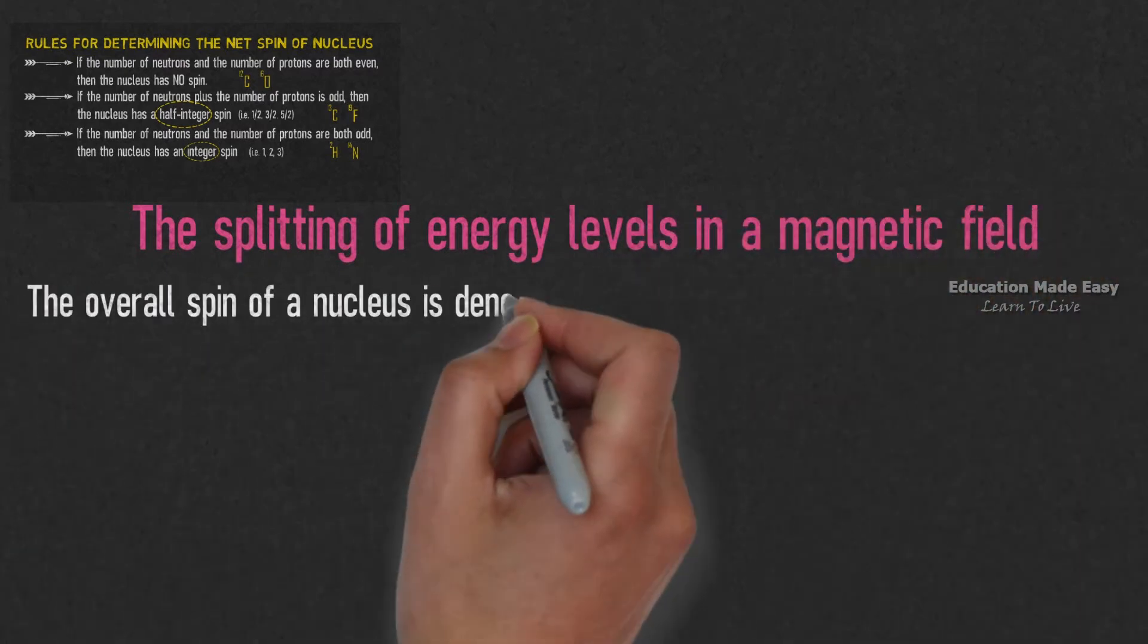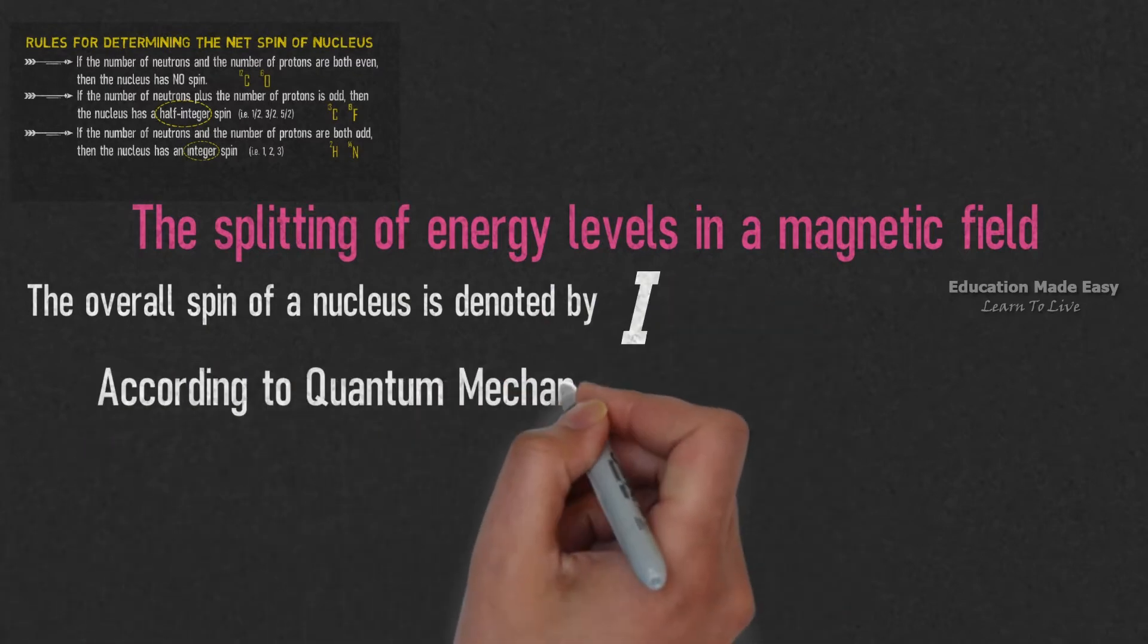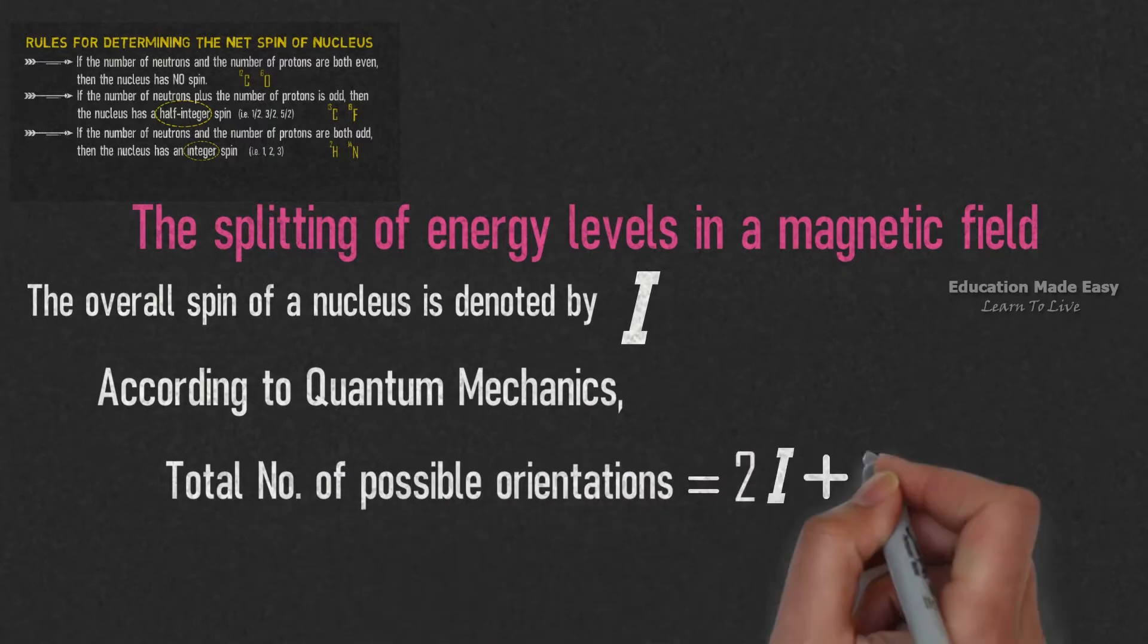The overall spin of a nucleus is denoted by I. Therefore, according to quantum mechanics, the total number of possible orientations is equal to 2I plus 1.